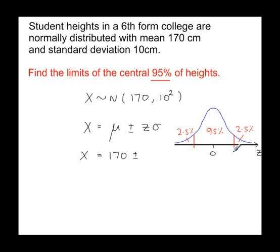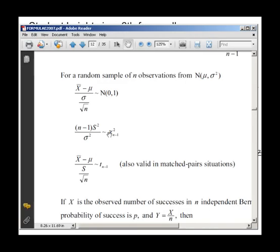Now we need a z-value here, and the z-value can be worked out by looking up the cumulative probability to the left of this line, which is 95 plus 2.5. So if you look up P equals 0.975, that's 97.5% from the normal tables.